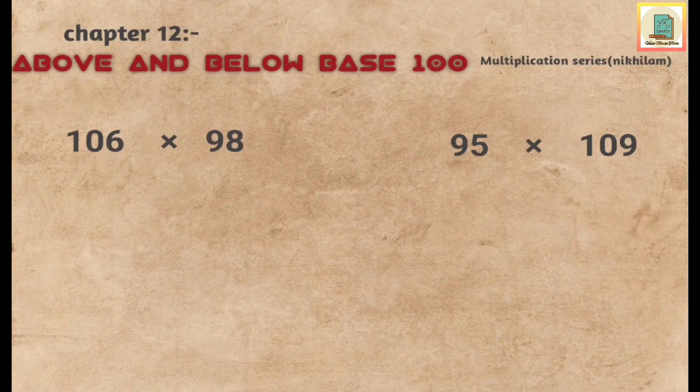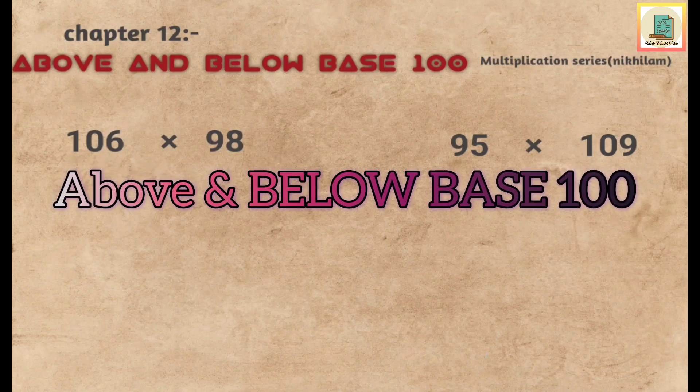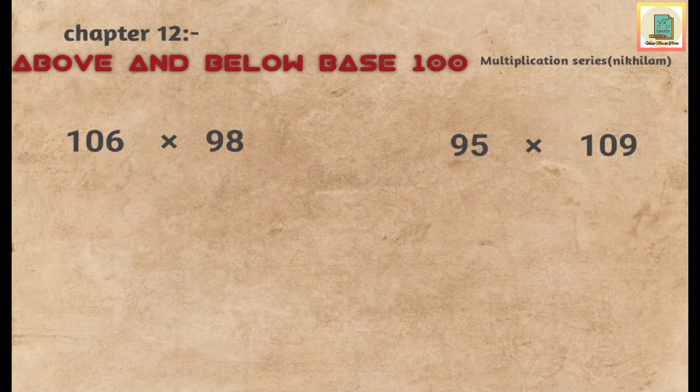Today's video is about above and below base 100. In this method, two numbers are multiplied where one number is bigger than 100 and the other is less than 100. Let's understand it better by taking examples.